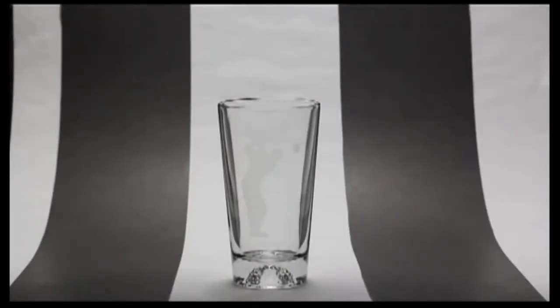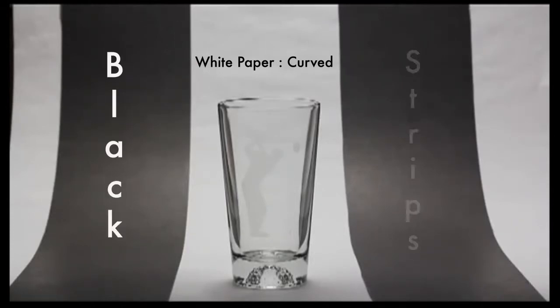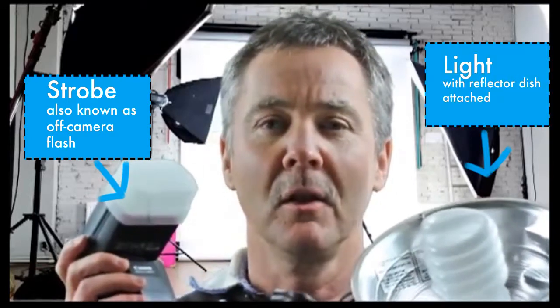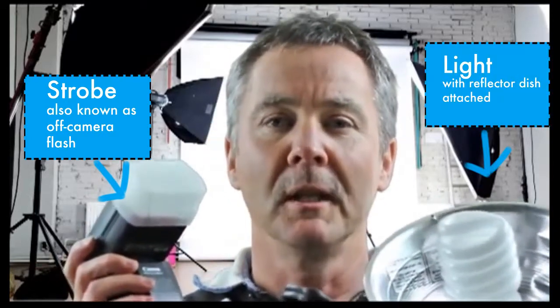So what you're going to do is set up a curved piece of white paper behind the beer glass with black strips on either side that will be out of the picture when you take the frame. You're going to need a strobe or a light that you can direct onto the background only.